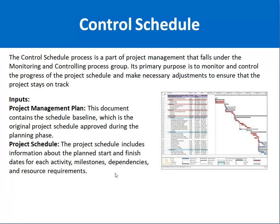The Control Schedule process is part of the Monitoring and Controlling process group. Its main purpose is to monitor and control the progress of the project schedule. For example, if you are implementing an e-commerce solution, after planning sessions you develop a schedule saying the project will be completed within four months, with milestones and activities defined for each month like January and February.